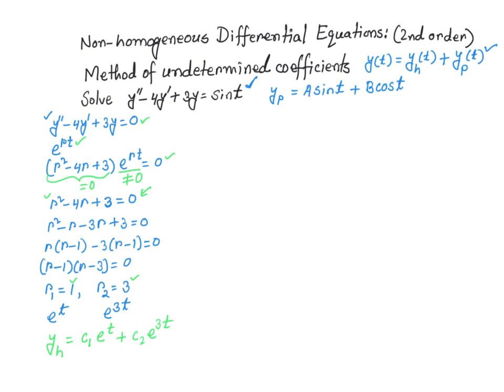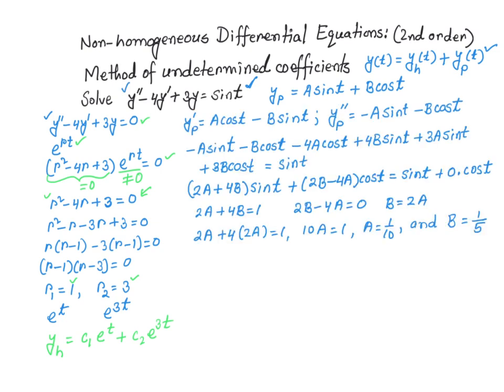I take the first and second derivative of this particular solution and plug everything into the differential equation. Along with the particular solution, if we substitute in, we get the resulting equation equal to sine of t. After reorganizing the terms and doing the algebra, we get a simplified expression.